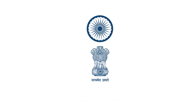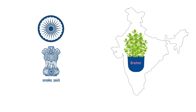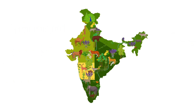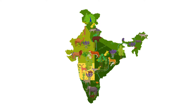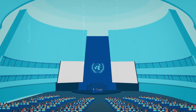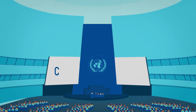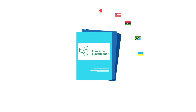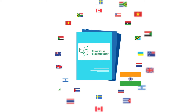India holds a sovereign right over Brahmi found in the country as well as over the traditional knowledge associated with it. The sovereign right allows a country to fully assert its exclusive entitlement over the natural wealth and resources found within its boundaries. This right of a country was recognized in 1992, when the United Nations adopted the CBD, the Convention on Biological Diversity. The CBD is a landmark agreement that has been adopted by 196 countries, including India.